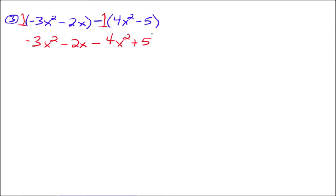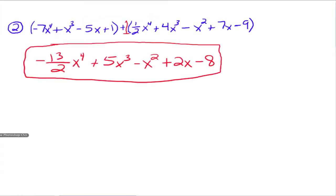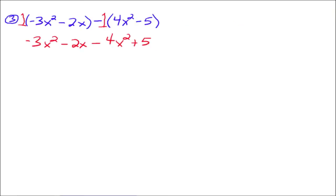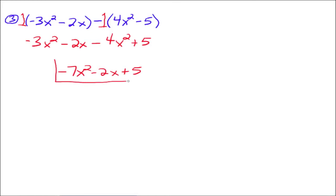We didn't have to do that with the previous example because on the previous example, it's a plus 1 sitting in front, and when you distribute the 1 through it doesn't change anything. But when we have the minus sign, distributing a negative 1 through the polynomial does make a big difference because it changes the signs of everything. So please put that line in first and then combine like terms. Negative 1 times 4x squared is negative 4x squared. Negative 1 times negative 5 is positive 5. So we get negative 7x squared minus 2x plus 5.